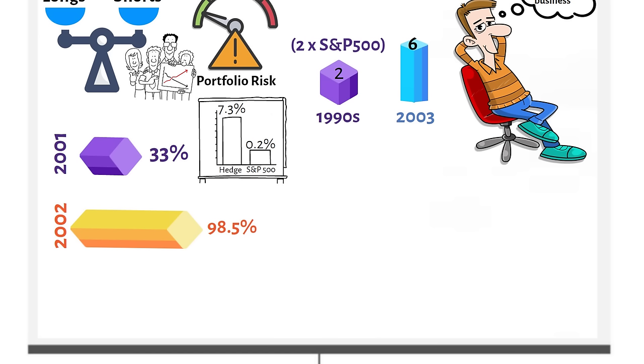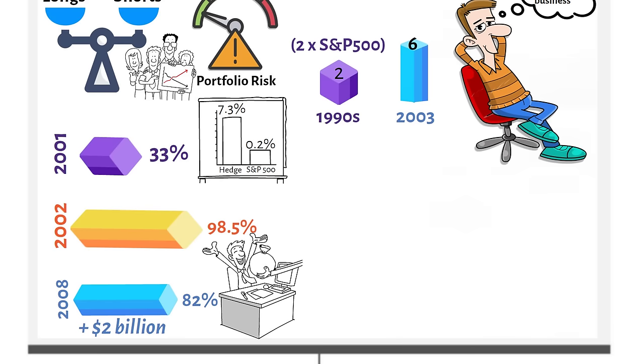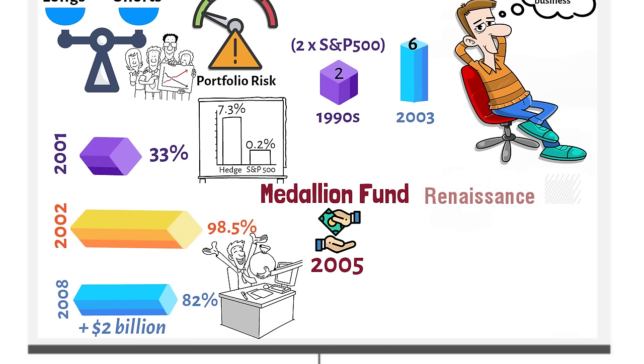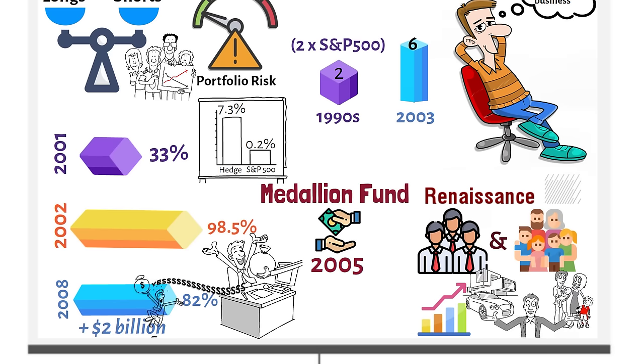In the subprime mayhem of 2008, Medallion's market-neutral system resulted in returns of 82%, earning Simons over $2 billion in personal profits. The Medallion fund bought out its last investor in 2005, making the fund an investment vehicle for Renaissance employees and their families only. The fund continued to rake in super performance afterward, making the Renaissance employees and their families multi-millionaires.